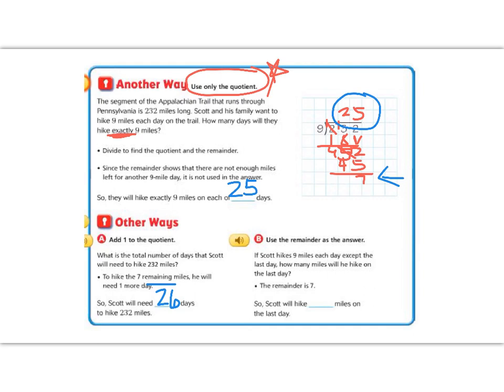B says use the remainder as the answer. If Scott hikes 9 miles each day except the last day, how many miles will he hike on the last day? So remember to use our word cues. We see the word except, and we see how many on the last day. The remainder is 7, so on the last day they will hike 7 miles.